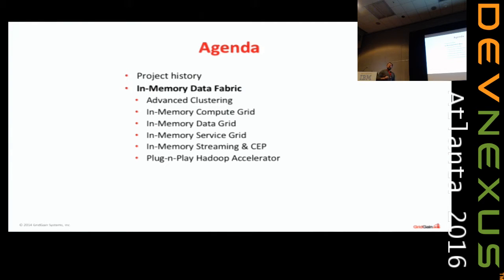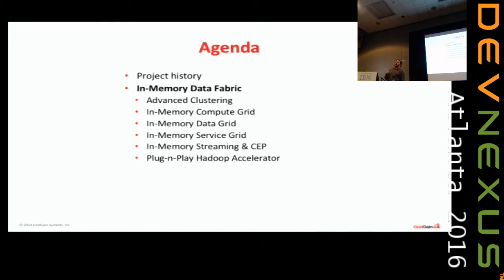Why all of a sudden, in the last three to five years, is there tremendous interest in these things? Knowing that we've known about this approach for the last 50 years, there's nothing new in this. There are probably several trends. First is definitely the big data trend — we have too much data and we have to process it all in real time. RAM gives you this pretty unique capability to move orders of magnitude faster in processing.